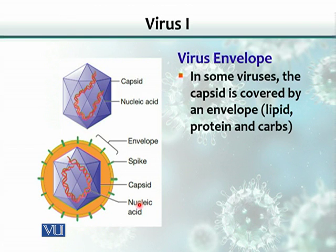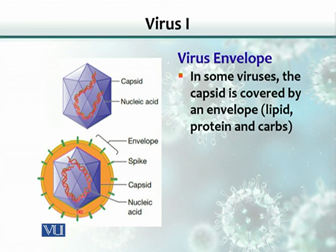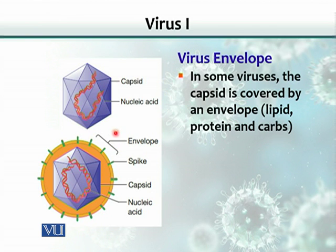Some viruses can have an additional layer. This is the capsid, but some viruses have another membrane around it, and this is called the viral envelope. Some viruses, when they bud off the cells after they multiply inside, they derive their outer membrane — which we call the viral envelope — from the host cells. Some of the projections you see are of viral origin, and some part is of the host cell membrane. Viruses that do not have an envelope are also called naked viruses.